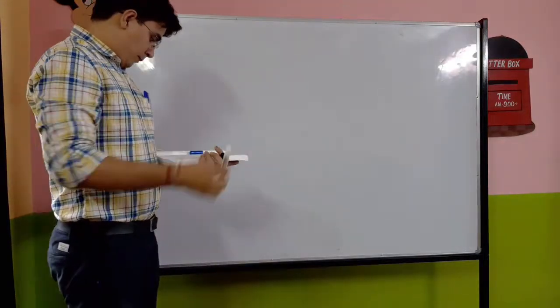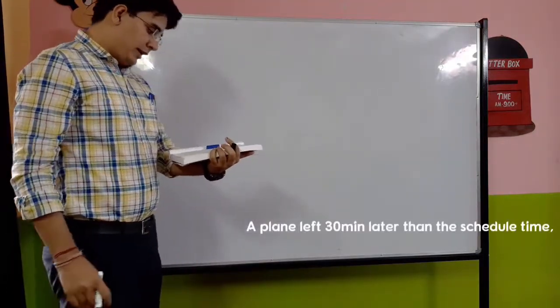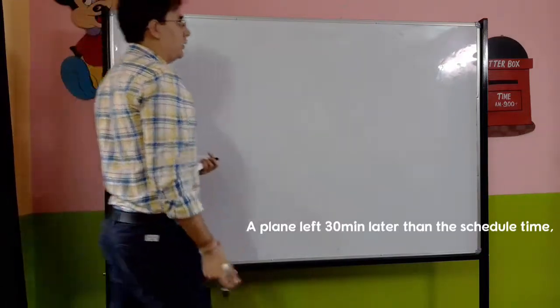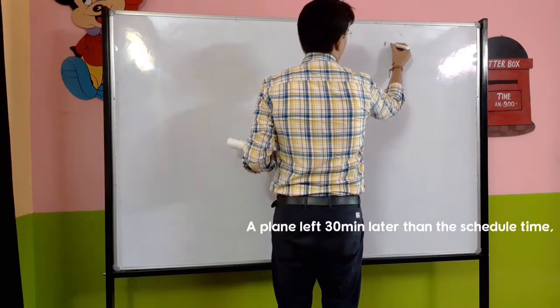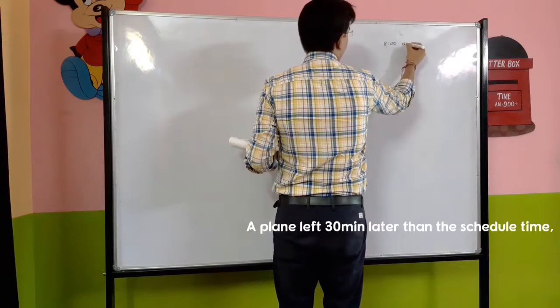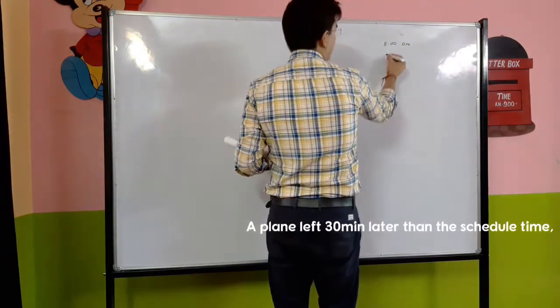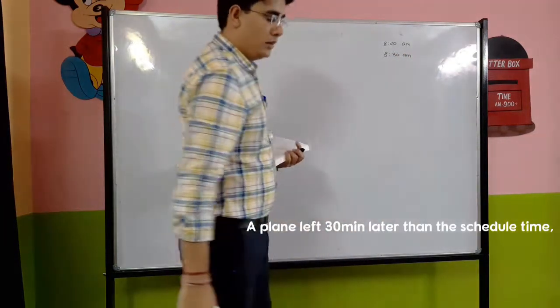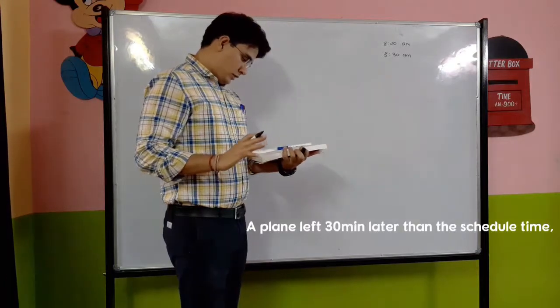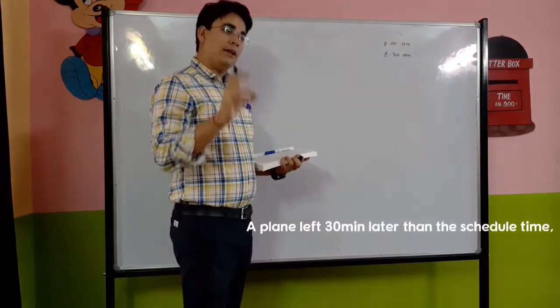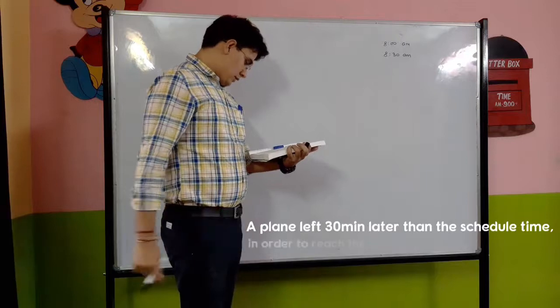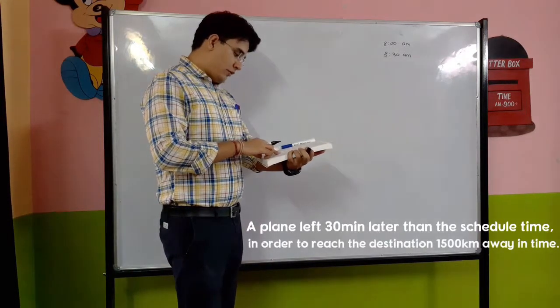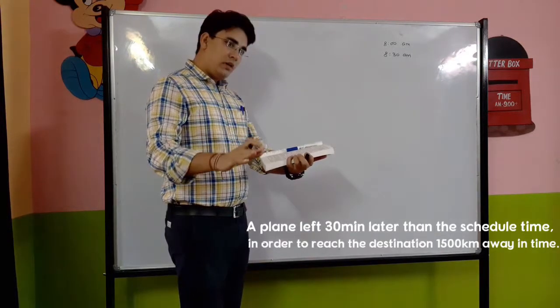Question number 6 is: A plane left 30 minutes later than the scheduled time. What time will it work? Like if it was 8 pm but it left at 8:30 pm. Whatever time it is, we know that it left half an hour late in order to reach the destination 1500 km away in time.